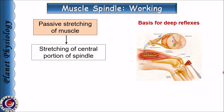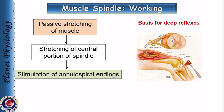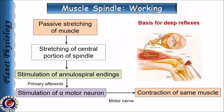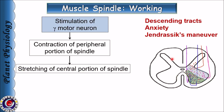Now let us study how muscle spindle is stimulated. Since the spindles are placed parallel to the extrafusal fibers and their capsules are attached to the muscle tendons, passive stretching of the muscle also causes stretching of the muscle spindle. This causes stretching of the central portion of the muscle spindle and stimulation of annulospiral endings, which in turn stimulates alpha motor neurons leading to contraction of the same muscle. This forms the basis for deep tendon reflexes.